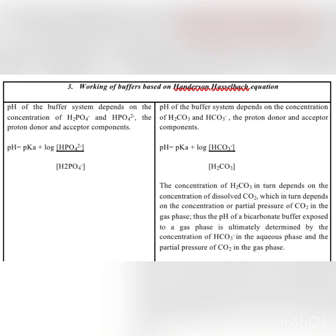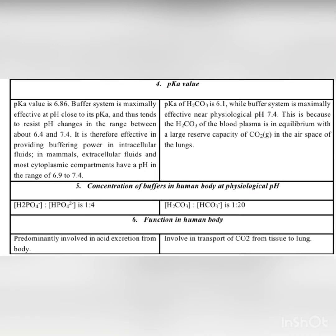The pKa value is reached when the two buffering species become equal and maximum buffering capacity is achieved. A buffer acts best at its pKa. The pKa value for the phosphate buffer is 6.86, while for the bicarbonate buffer it is 6.1.